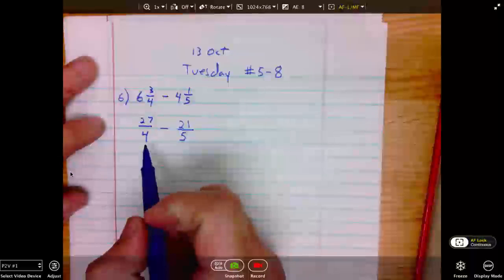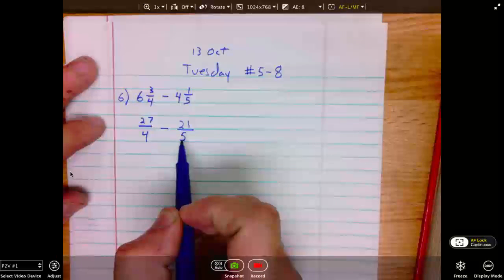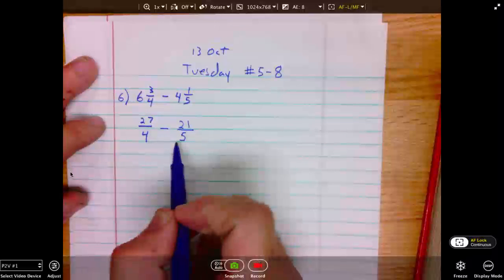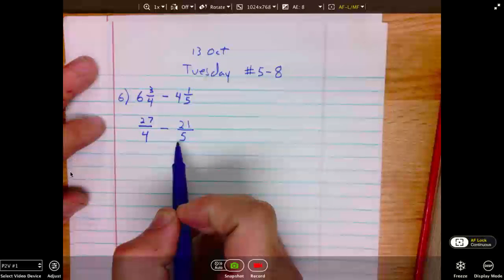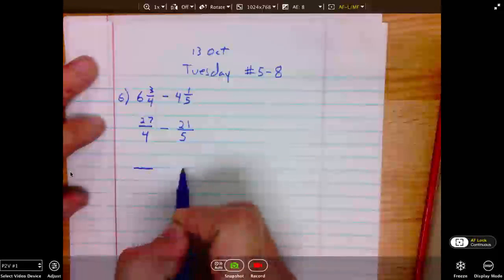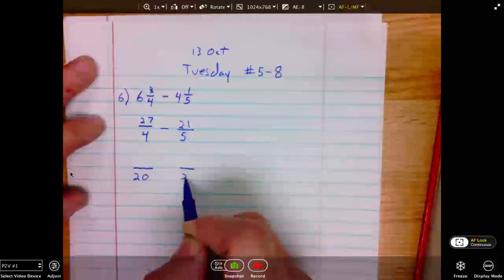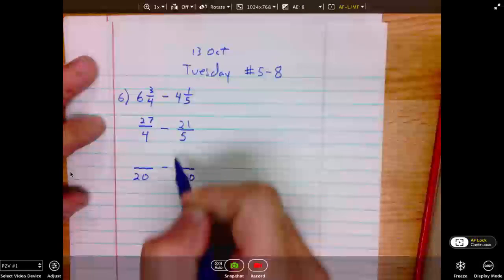Now, when we're subtracting, we must have a common denominator. Well, the common denominator between 4 and 5 is 20. One way to find that is to simply multiply 4 times 5. So, both of these denominators will become 20. The subtraction stays the same.